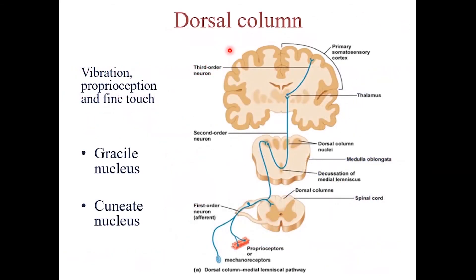The posterior or dorsal column is responsible for vibration, proprioception, and fine touch. It has two nuclei: the gracile nucleus, which carries information from the lower limbs, and the cuneate nucleus, which carries information from the upper limbs. The signals ascend on the ipsilateral side in the dorsal column until the level of the medulla, where they cross to the opposite side and continue to the brain.